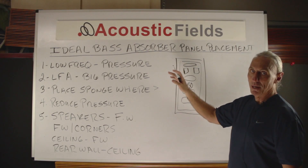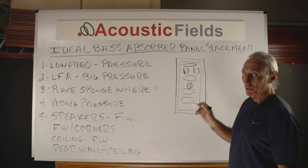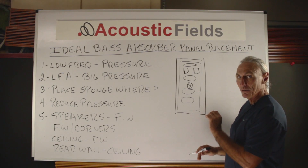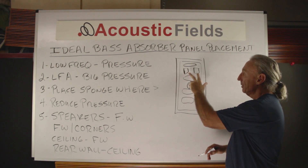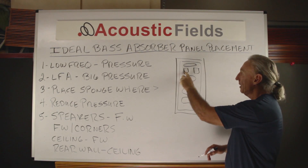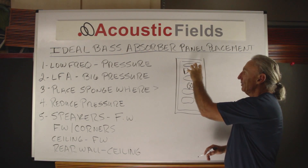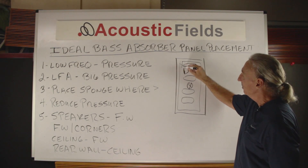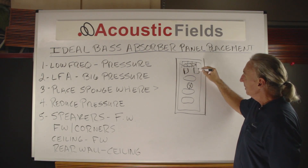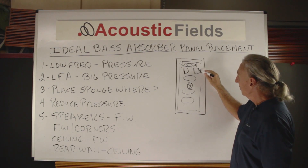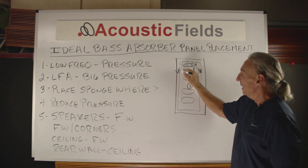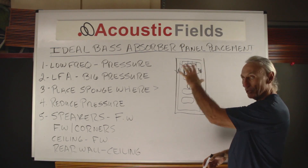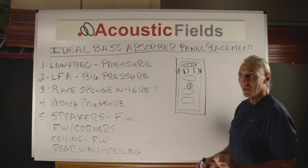The boundary surfaces of the room are always a good place to start for pressure management, but we can narrow that focus down even further. Our two pressure-producing devices in the room are our left and right channels. The energy created by these two devices is going to be really high between the speakers and the front wall, and really high between the speakers and the side wall. If you don't have the capital to treat your whole room, this is the first area you start with.